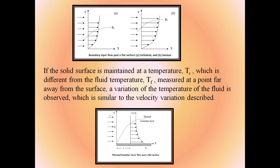If the solid surface is maintained at temperature Ts, different from the fluid temperature Tf measured far from the surface, a variation of the fluid temperature is observed similar to the velocity variation. The fluid temperature varies from Ts at the wall to Tf far away, with most of the variation occurring close to the surface. These diagrams show the boundary layer flow past a flat surface, for both turbulent and laminar flow, and also the thermal boundary layer flow past a flat surface.